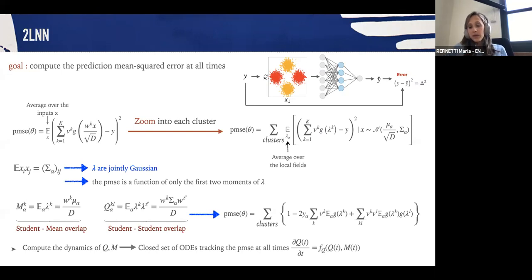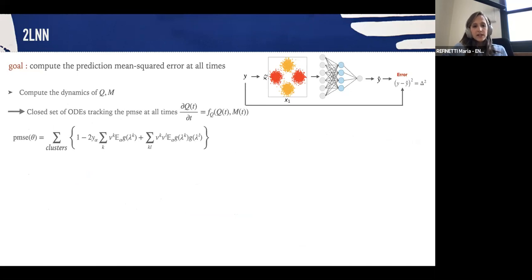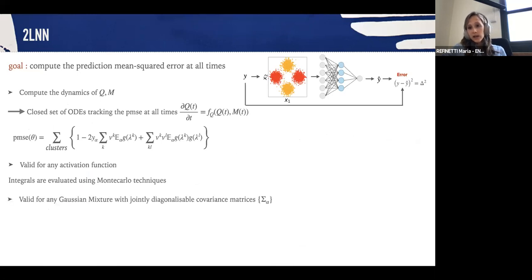Given that the PMSE is only a function of disorder parameters, by computing the training dynamics of q and m and obtaining a closed set of ODEs tracking their dynamics, we can have the MSE at all training times. This analysis is valid for any activation function and also for any arbitrary Gaussian mixture with the constraint that the covariance matrices must be jointly diagonalizable.